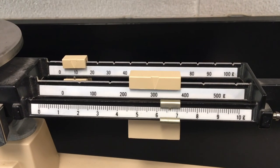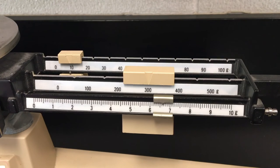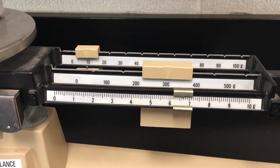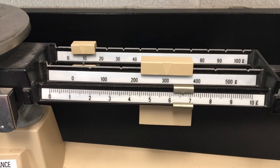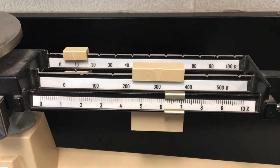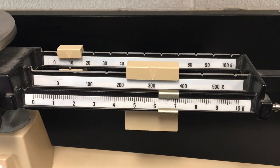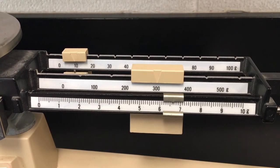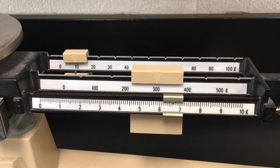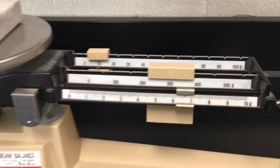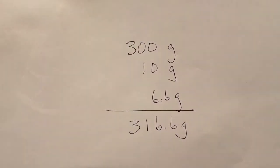Let me write that down for you while you're looking at the screen. I add up my 300 grams, my 10 grams, and finally my last 6.6 grams, for a total of 316.6 grams. And that is the weight, the mass of my paperweight.